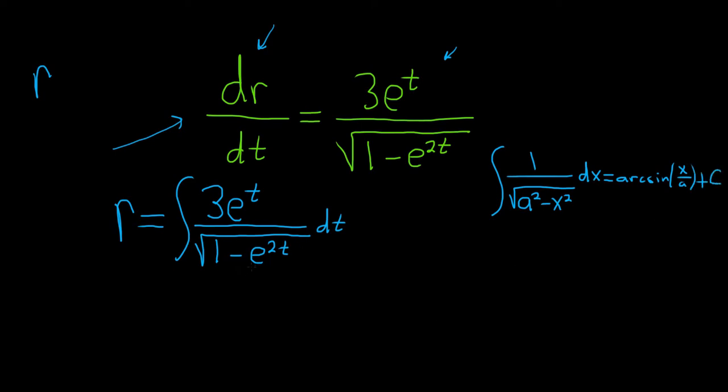So we have to make this integral match the formula. So notice we can rewrite the integral as follows. I'll pull the 3 out and leave this as e to the t over square root 1 minus, and then watch this, e to the t squared.